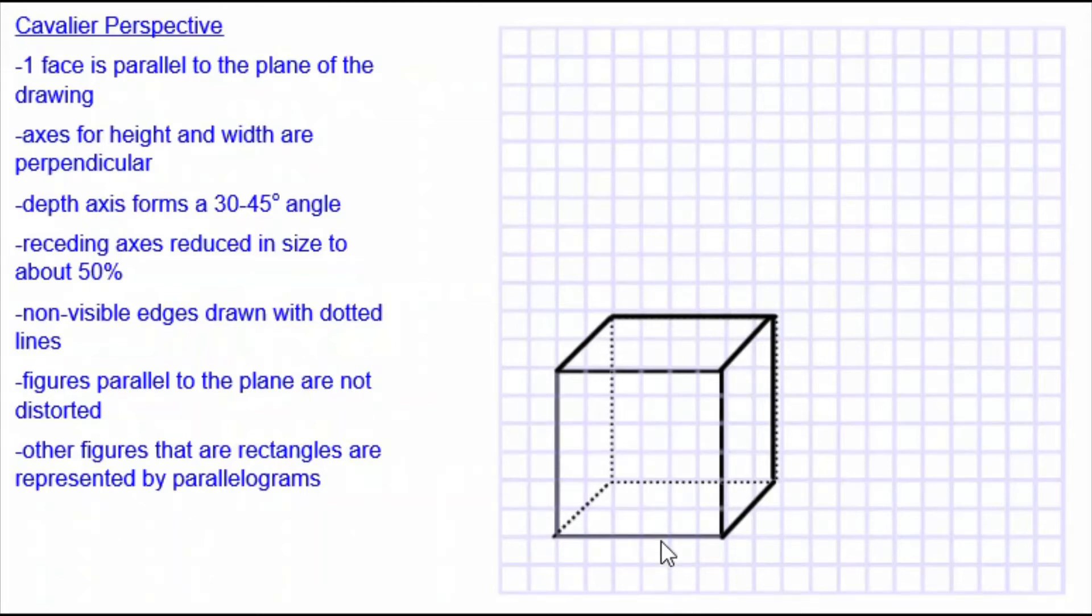So this is a three centimeter side length cube drawn with cavalier perspective. One face is parallel to the plane of the drawing. That's this front square, the first square I drew. The axes for the height and width are perpendicular, as you're used to seeing with graph paper.